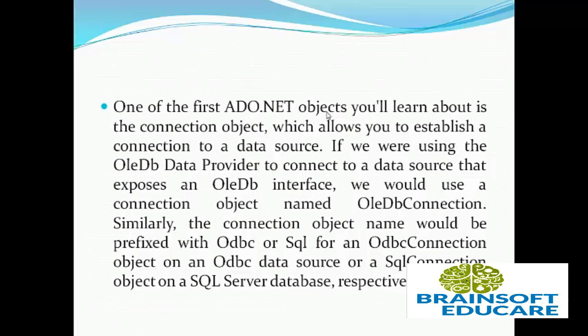One of the first ADO.NET objects you will learn about is the connection object, which allows you to establish a connection to a data source. If we were using the OLEDB data provider to connect to a data source that exposes an OLEDB interface, we would use a connection object named OLEDBConnection. Similarly, the connection object name would be prefixed with ODBC or SQL for an ODBC connection object on an ODBC data source, or SQL connection object on a SQL Server database respectively.